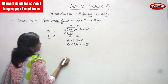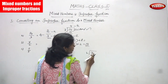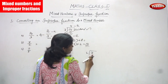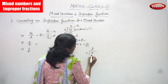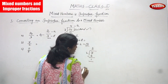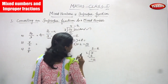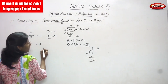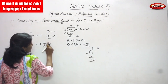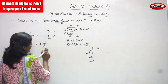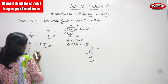Next sum is 7 by 2. You do the same method. You have to divide: 7 is the dividend and 2 is the divisor. 3 twos are 6. The remainder is 7 minus 6, which is 1. So 1 is the remainder and 3 is the quotient and 2 is the divisor. The answer is 3 is the whole number and 1 by 2 — the remainder is the numerator and the divisor is the denominator. The answer is 3 and a half, that means 3 and 1 by 2.